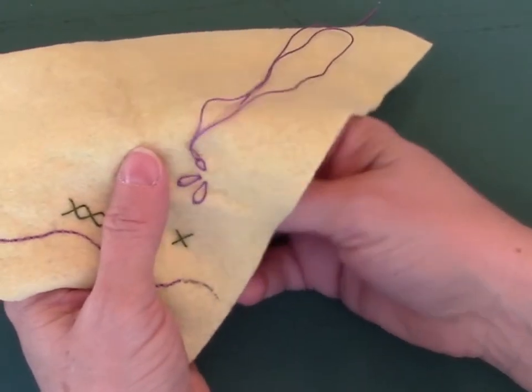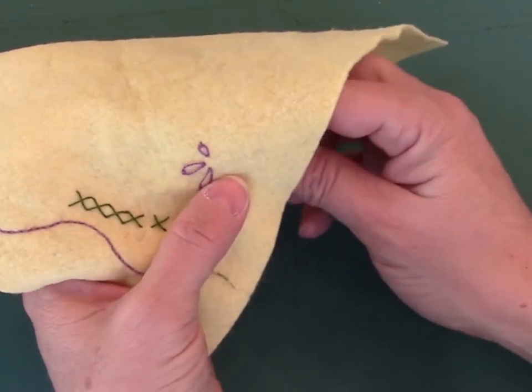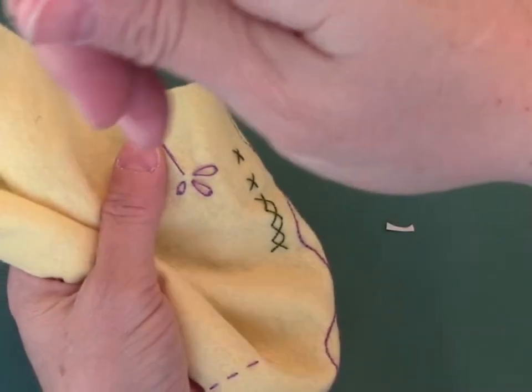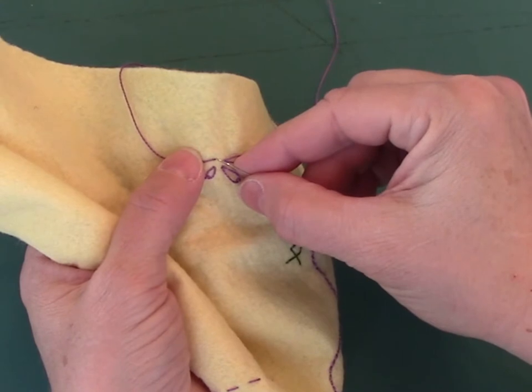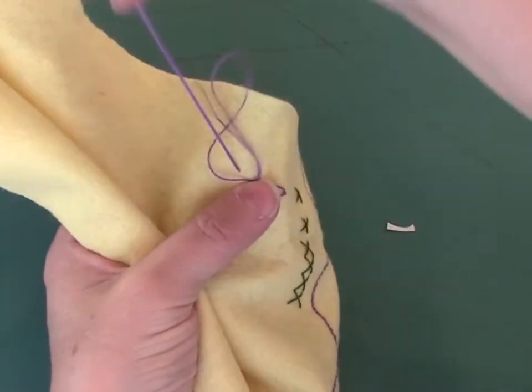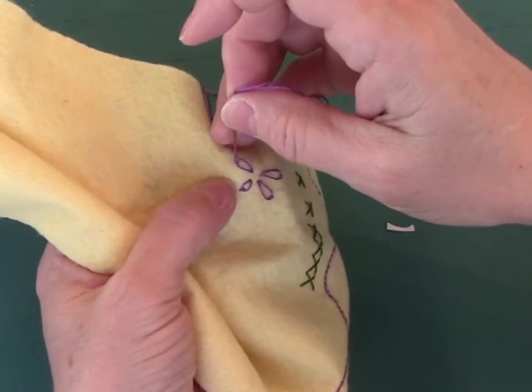You can play with how tight you want to pull them. You can also play with how long your tack stitch is. Again I'm coming up where my point's going to be, going down right next to it, pulling it up, and tacking it down.